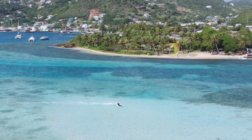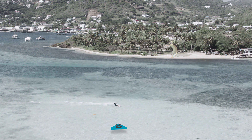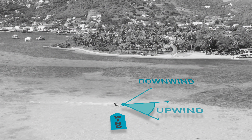You first want to be aware of the wind direction and the different angles you'll be able to kite to in relation to the wind. This is what we refer to as our course. Let's have a look at the three different courses we can ride.